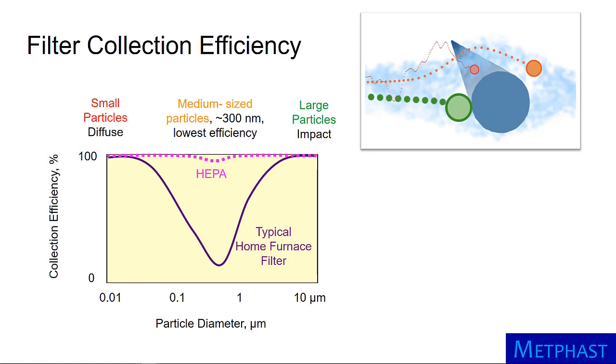The combined effect of diffusion and impaction results in a collection efficiency curve that is typical of filters. Here I show particle collection efficiency by particle size. The purple curve is typical of a low-efficiency filter, like a low-cost furnace filter.